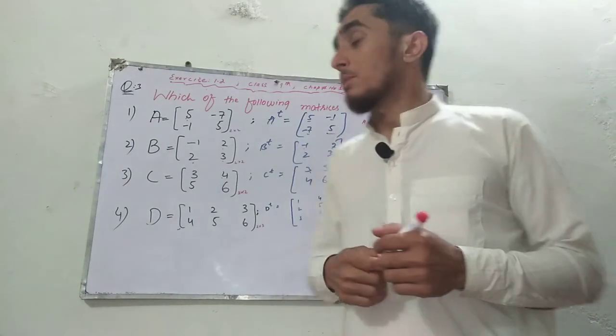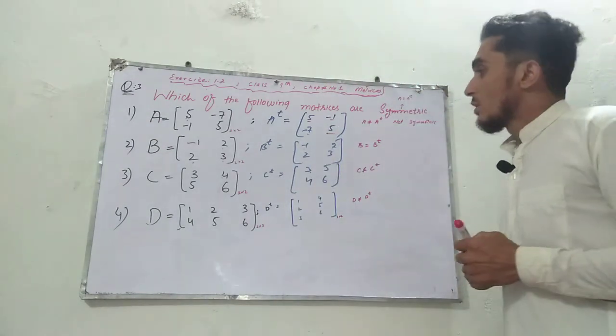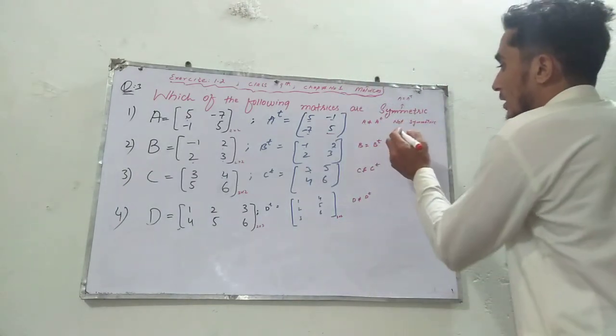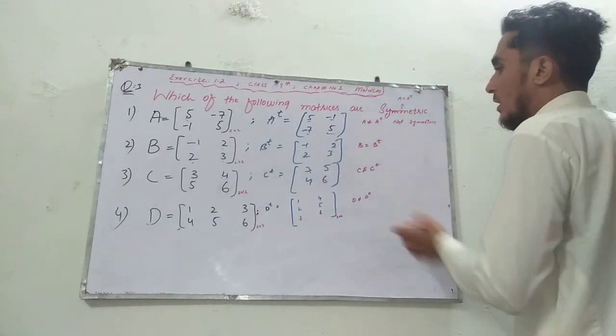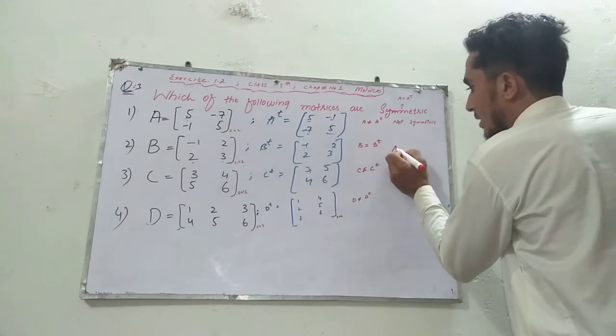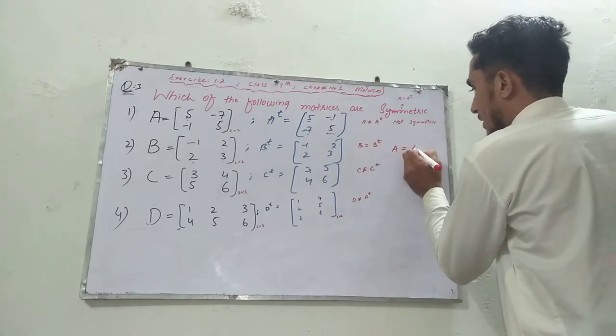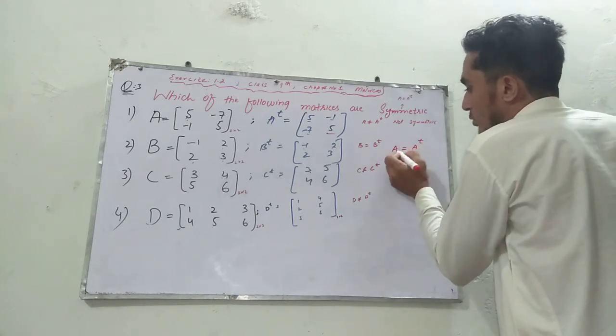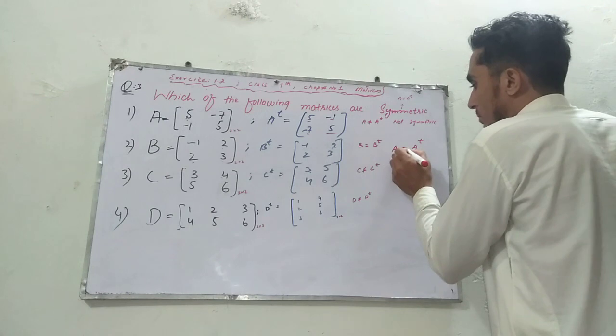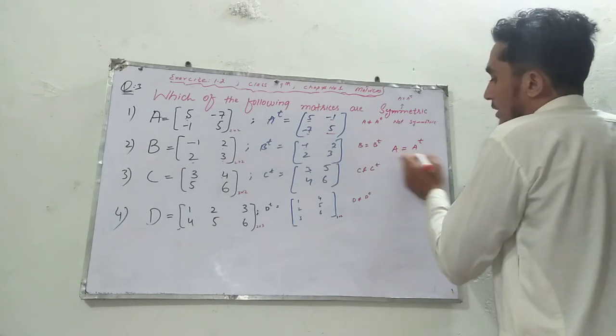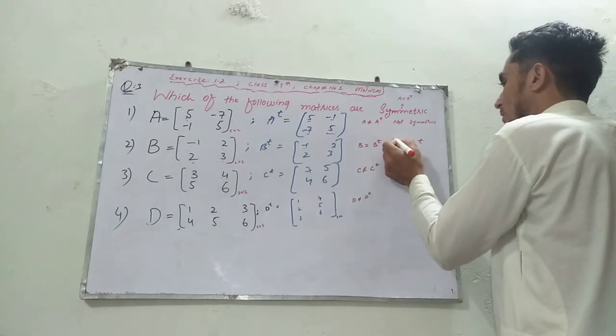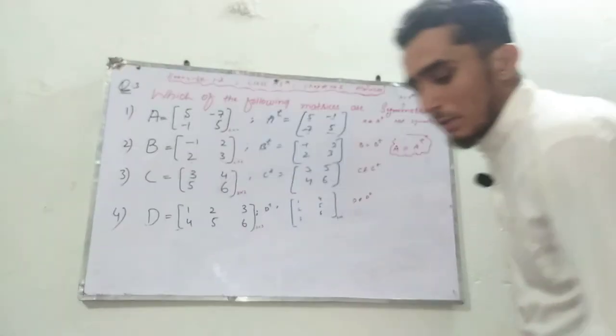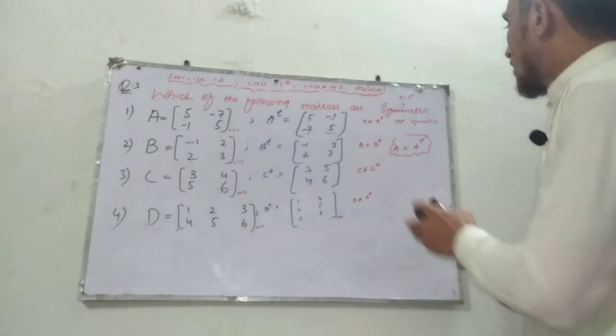First of all, we have to say what is symmetric. Symmetric is a type of matrix. A matrix is symmetric if A transpose equals A. If A transpose is not equal to A, then the matrix is not symmetric.